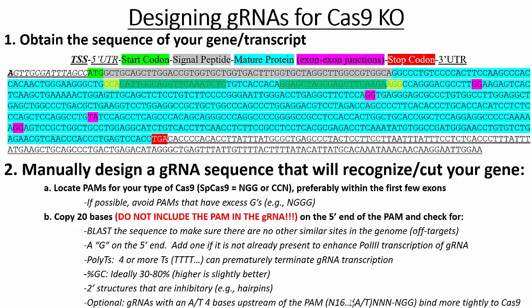Last but certainly not least, if you can, you should select a gRNA sequence that has an A or a T four bases upstream of the PAM. For example, looking at this gRNA, four bases away from the PAM is an A — that's a pretty good gRNA. If you have an A or a T in that location, it will actually enhance binding of the gRNA by Cas9. Cas9 prefers to have an A or a T in that position. If you have a C or a G, that's not the end of the world, but if you're splitting hairs between two very good gRNAs, this might help you decide.